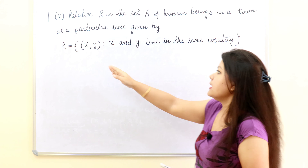First of all we will check it for reflexive. The condition for reflexive is that (X,X) should belong to R. So here that means X and X live in the same locality. This is obvious because a person remains the same no matter how many times we write them. A person lives in the same locality if we repeat them n number of times. So here it is a reflexive relation.